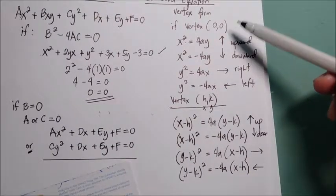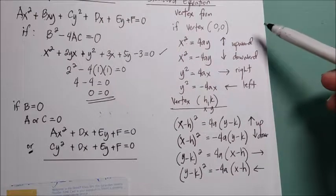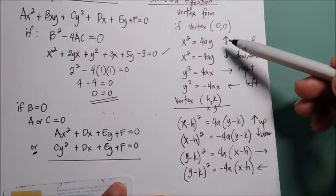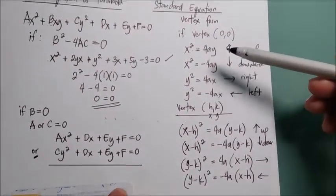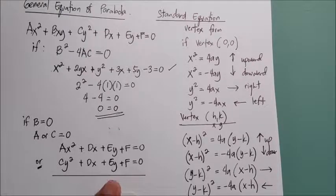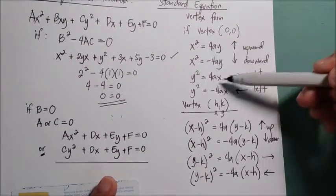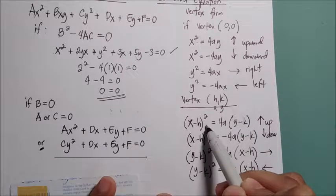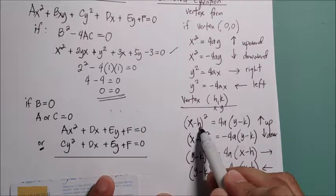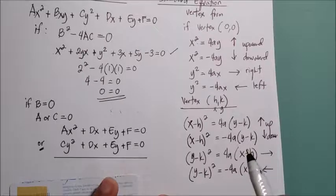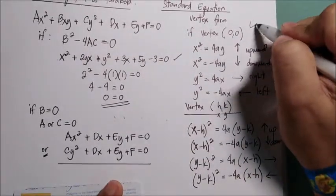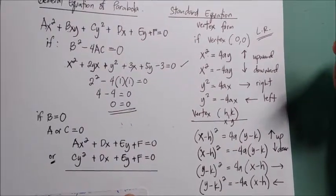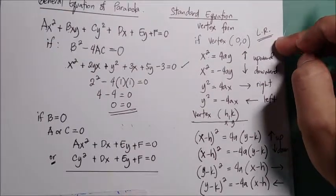It is very important to memorize these standard equations, especially for the Civil Engineering board exam or other professional exams involving mathematics. These equations are also used in integral calculus. From the standard form you can immediately identify the vertex at (h, k), and the value 4a gives the latus rectum. The elements of the parabola will be discussed next.